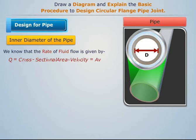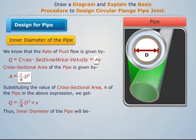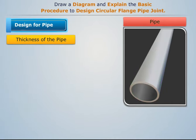We know that the rate of fluid flow is given by the cross-sectional area of the pipe. Substituting the value of cross-sectional area A of the pipe into the expression, we get the inner diameter of the pipe.